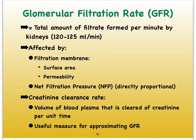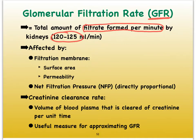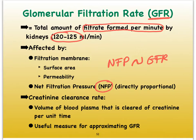One of the numbers you should memorize is the amount of filtrate we can form per minute. That is referred to as our glomerular filtration rate, which is about 120 to 125 milliliters per minute, give or take. How much filtrate is formed per minute is clearly going to depend on our net filtration pressure. We see a direct relationship between net filtration pressure and glomerular filtration rate. We also need to think about the filtration membrane — if it has a nice healthy surface area and just the right permeability, with no damage causing increased or decreased permeability, we will not see any major impact on the GFR.